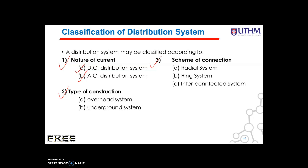The second classification is the type of construction. According to type of construction, the distribution system may be classified as: A, the overhead system, and B, the underground system. The overhead system is generally employed as it is 5 to 10 times cheaper than the equivalent underground system. In general, the underground system is used at places where overhead construction is impracticable or prohibited by local laws.